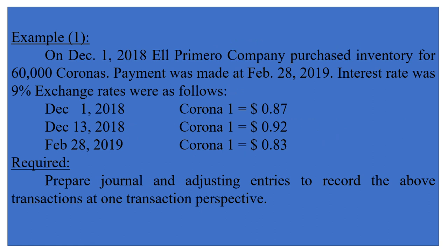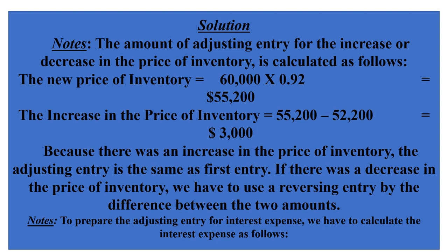To illustrate the difference between these two methods, we use the following example: a purchase of inventory where the exchange rate changed from the date of purchase through December 31, and by the end of the year on February 28th, a final payment is required. Prepare the journal and adjusting entries to record the transactions under the one-transaction perspective. The new price of inventory is calculated as 60,000 times 0.92, which equals 55,200.